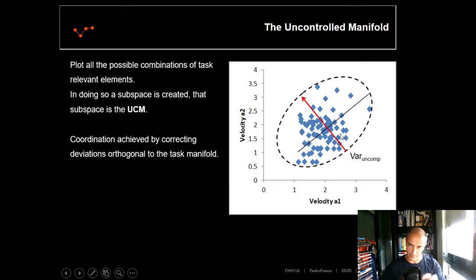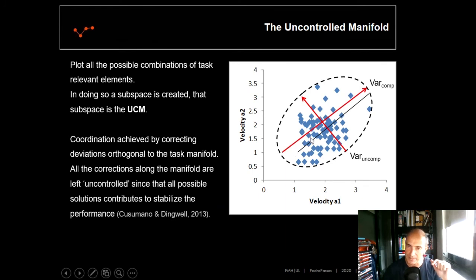So one thing, we have a performance goal and they need to control this kind of variance here in order to stabilize the interpersonal angle. But we have a different variability, which is the variance along the task manifold. This variance here can be left and should be left free. It means that all the possible solutions are possible as long as they will contribute to stabilize the interpersonal angle. So the UCM is based on this. It's based on this subspace. In this subspace, we can compute this variance.